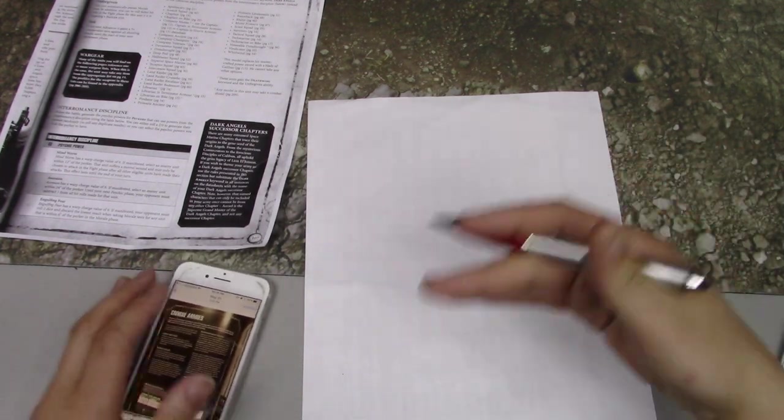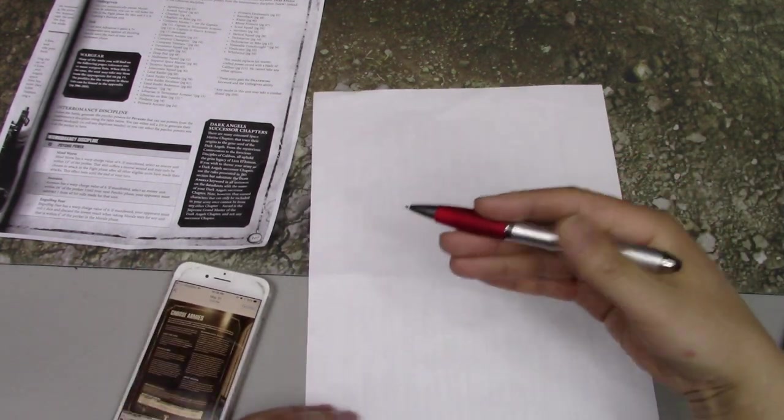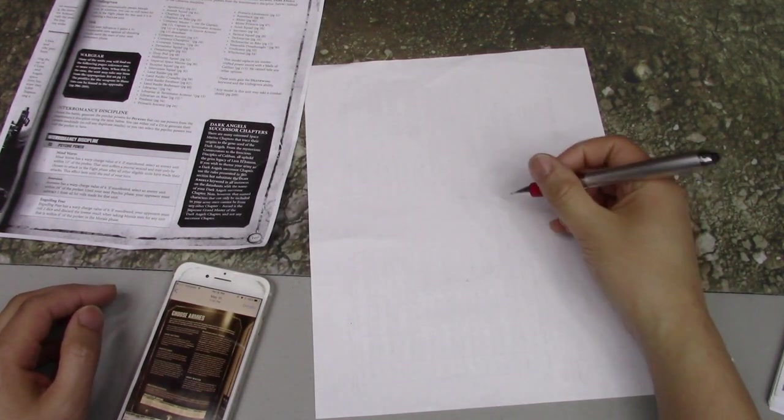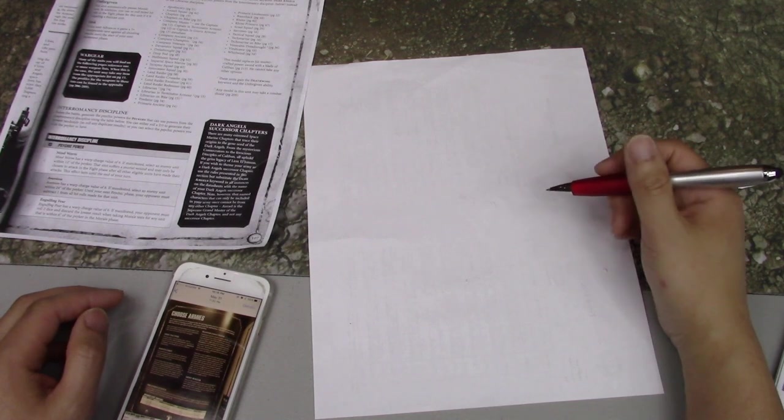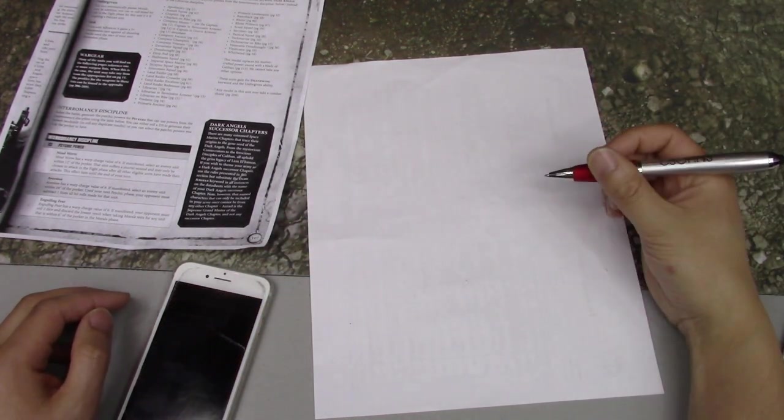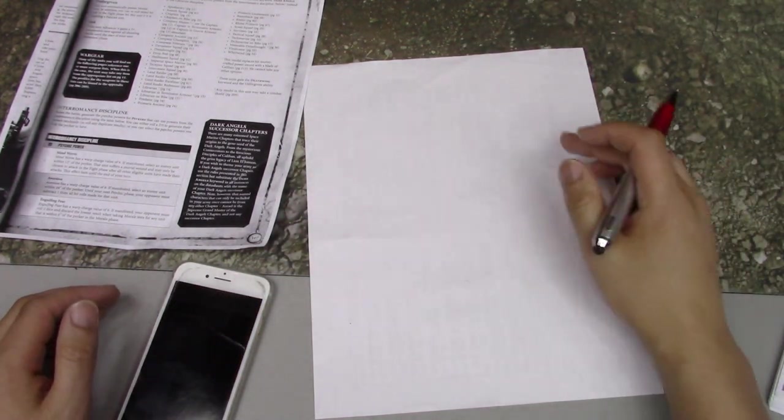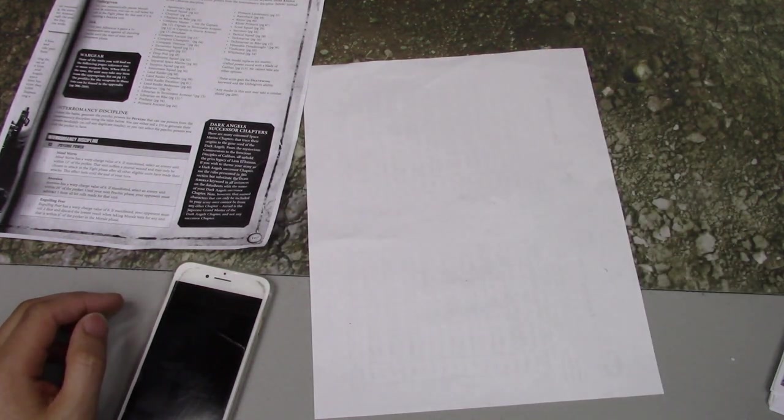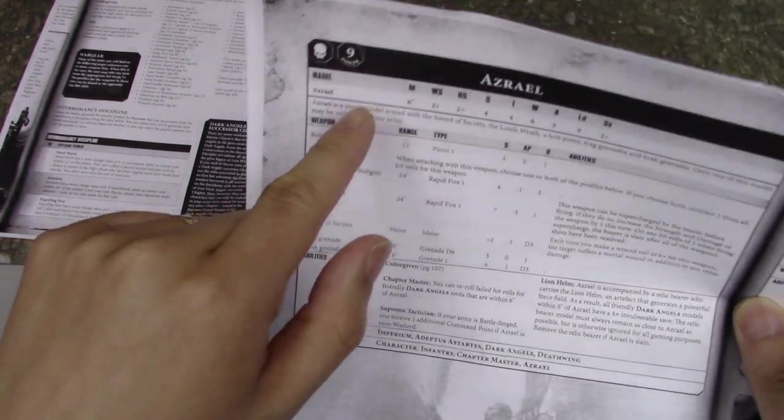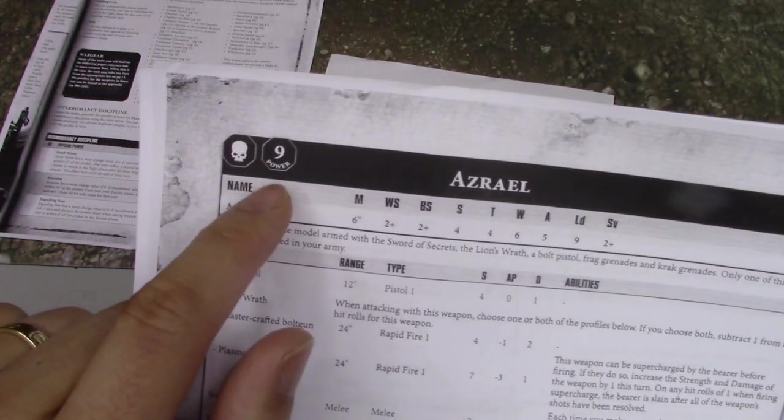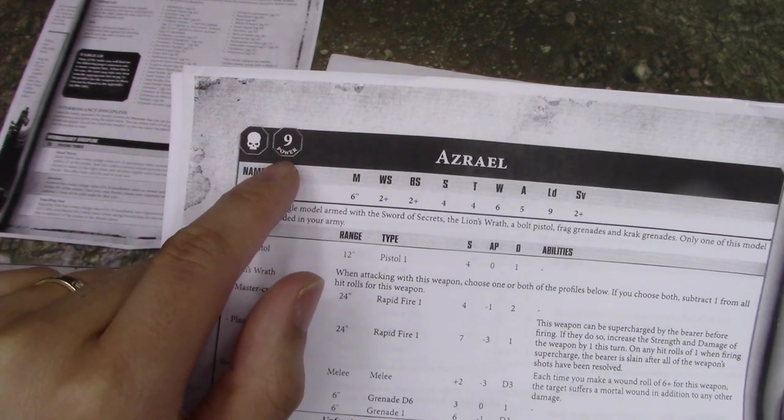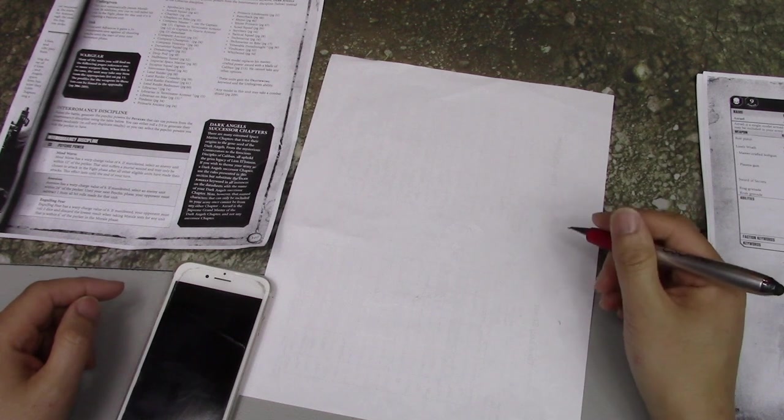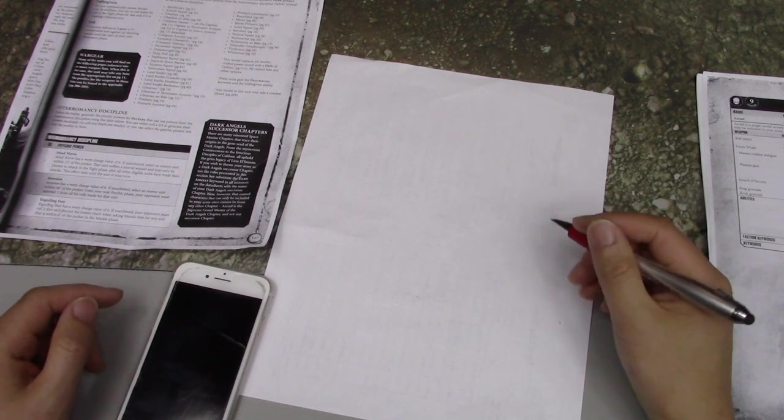So let's get started. The first thing to note is this is about writing a matched play list, not narrative, and not using power levels. That's a very easy way to write a list - you just decide with your opponent how many power levels you're going to play, and put in units up to that power level. We're going to be using points, matched play, as if we were going to a tournament.